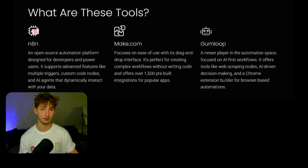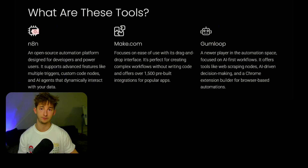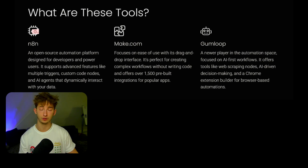Gumloop, on the other hand, is a new player in the automation space, pretty much focused on AI-first workflows. Gumloop offers tools like web scraping nodes, AI-driven decision-making, and even a Chrome extension that allows you to build browser-based automations, which I will get into later in this video.